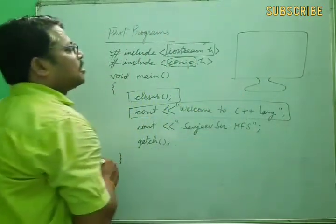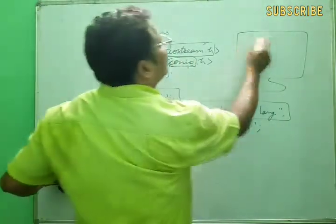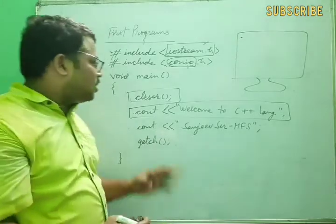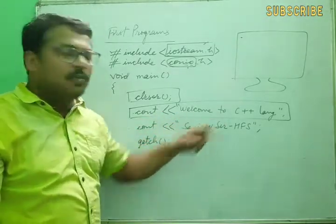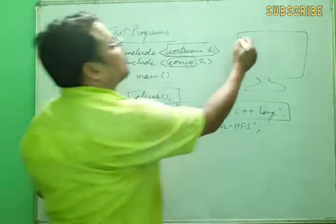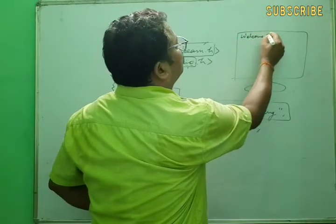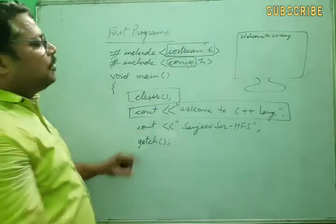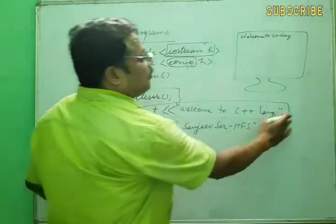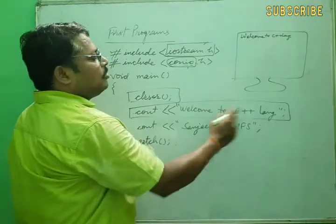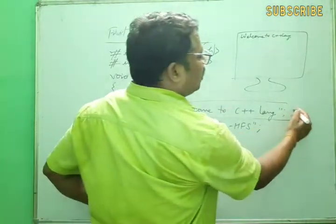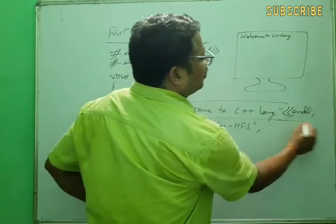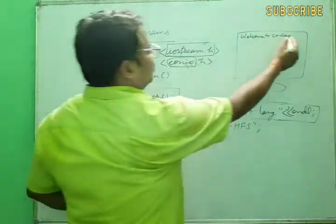On the monitor screen, clrscr clears whatever was there and the cursor will blink. Then the next line executes — the message 'Welcome to C++ language' is displayed. After that, the second cout line executes. If we have not written endl, it will continue on the same line showing the next message.